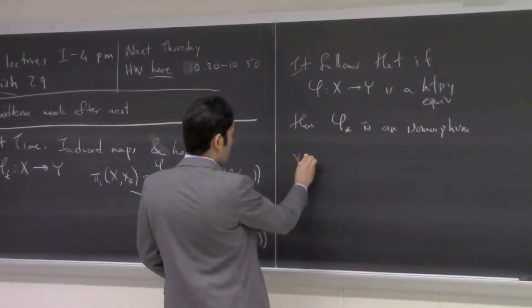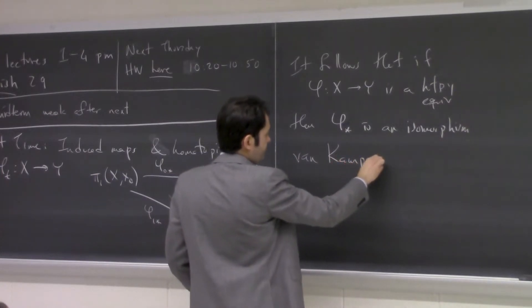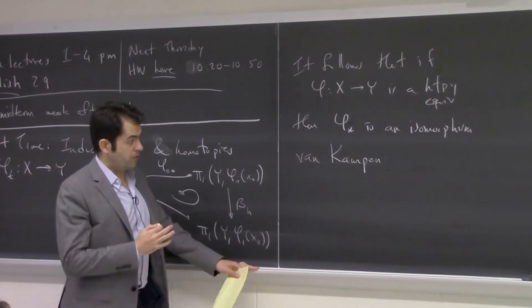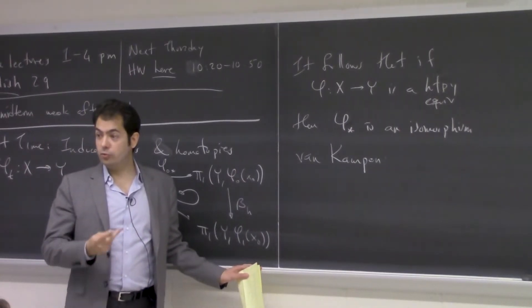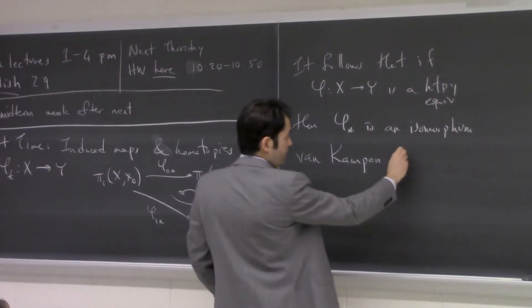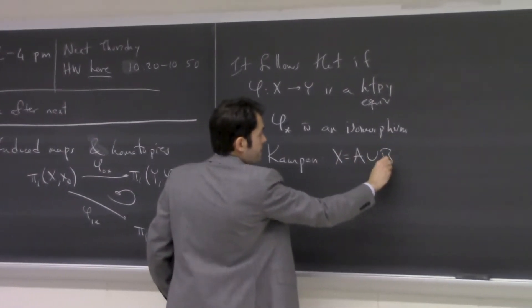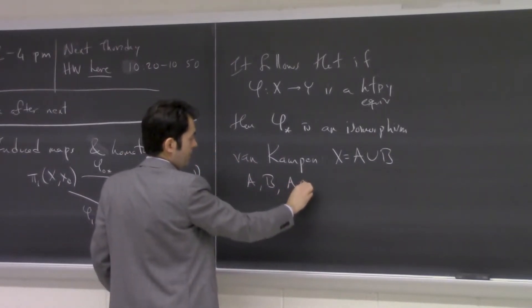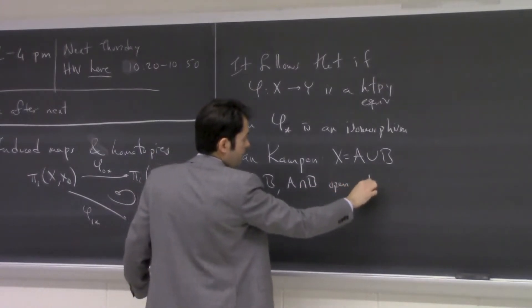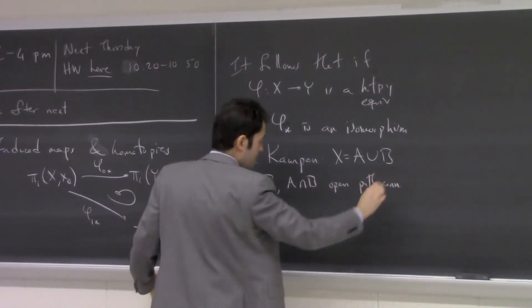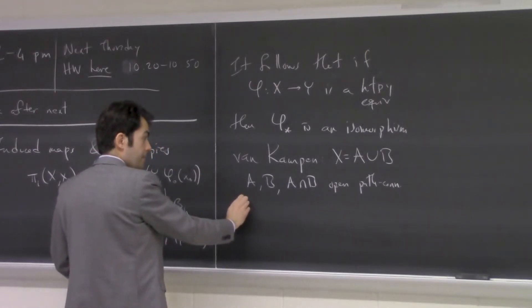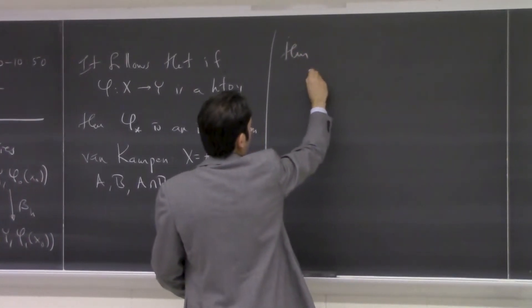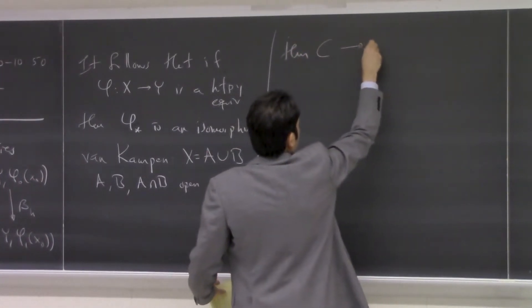Then we talked about the van Kampen theorem as a great way of computing fundamental groups. For the case of an open cover by two sets, if you can write X as a union with A, B, and A intersect B open and path connected, then one way of writing this is in terms of diagrams.